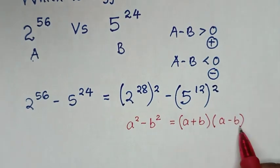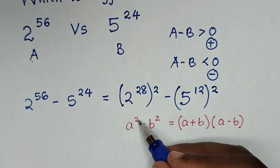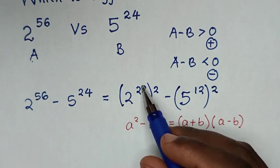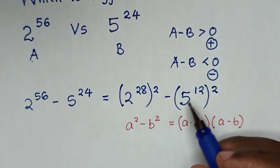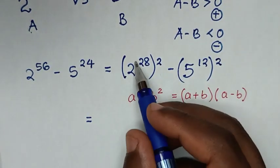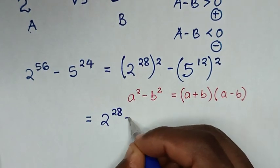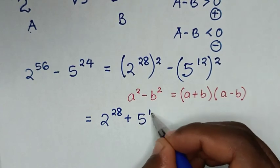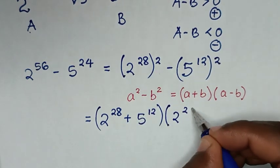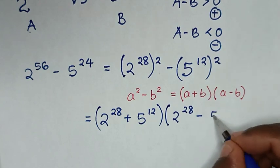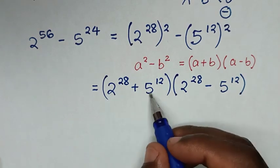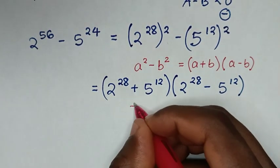Comparing a squared with 2 power 28 squared, a is the value inside the bracket. So it equals (2 power 28 plus 5 power 12)(2 power 28 minus 5 power 12). The addition of these two exponents is a positive value, but the difference between them we don't yet know.